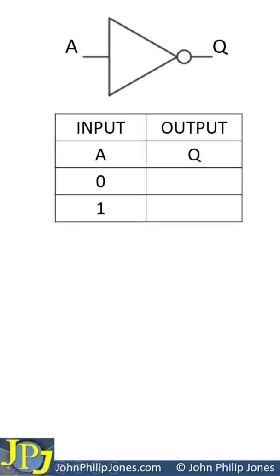This is the symbol for a logic NOT gate, and we can label the input with A and the output with Q. Let's consider the truth table.